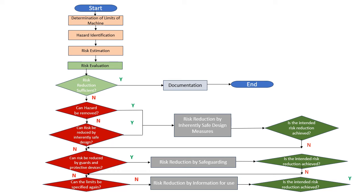After applying information for use, we again ask whether the intended risk reduction is achieved. If yes, we note that all three steps — risk reduction by inherently safe design measures, risk reduction by safeguarding, and risk reduction by information for use — must be used in sequence. You should not start with information for use first. The correct sequence is: first, risk reduction by inherently safe design; then risk reduction by safeguarding; then risk reduction by information for use.